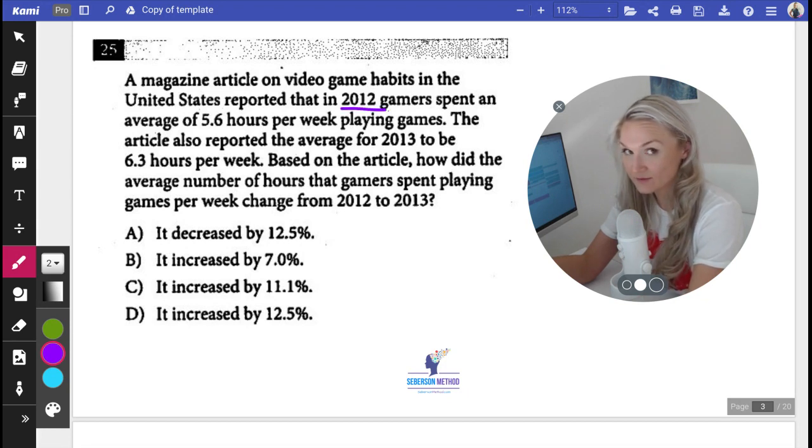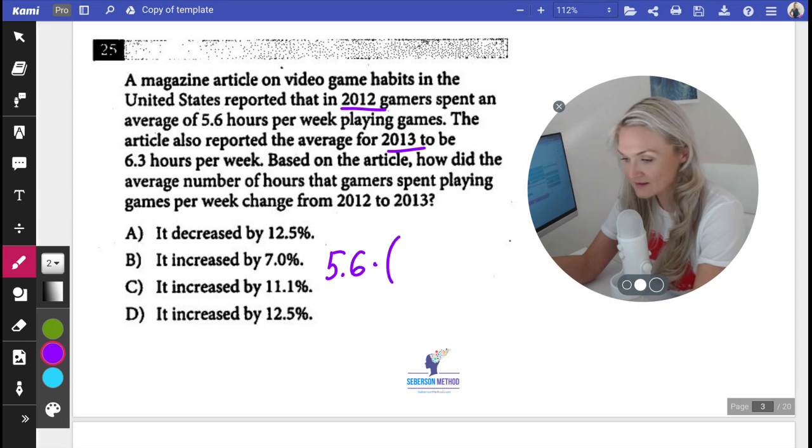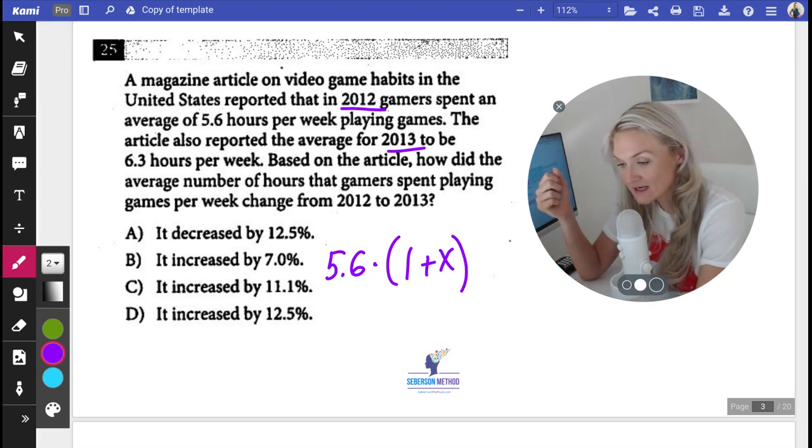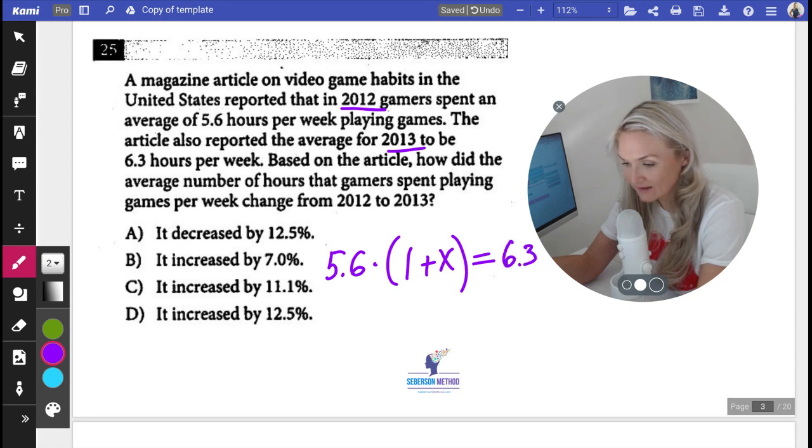So 2012 was the original, 2013 was the final. So we're going to say 5.6 times 1 plus x, because if we end up finding out that the value decreased, then we're going to say minus x, but it looks like the value did go up. And that equals to 6.3.